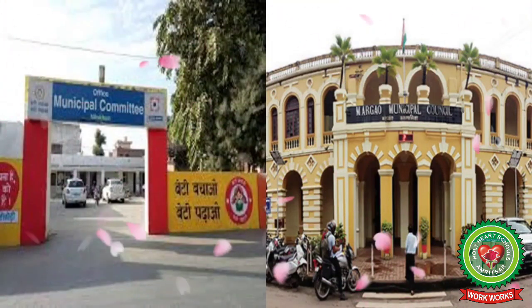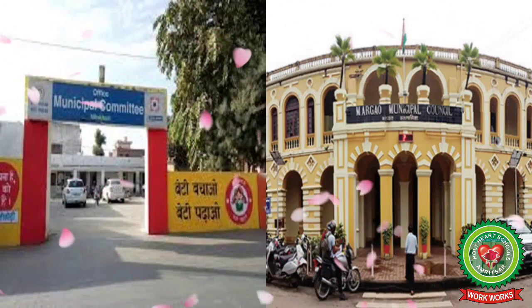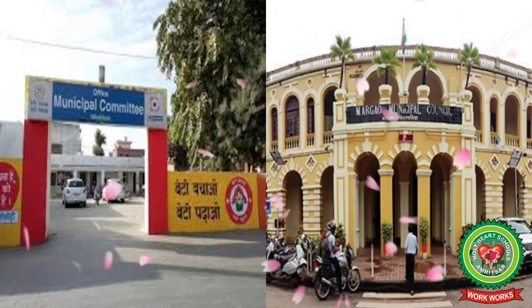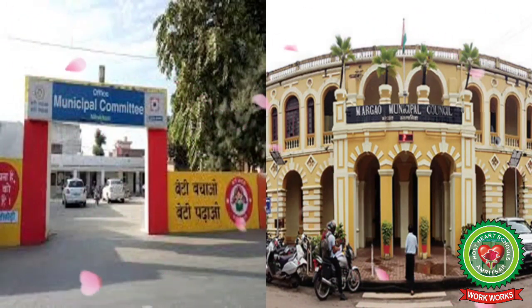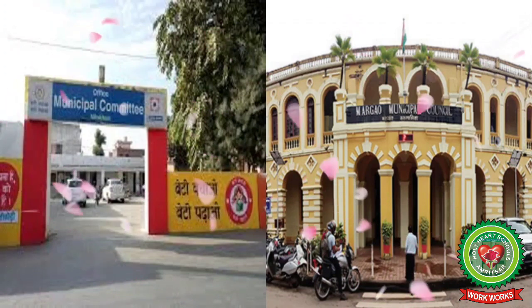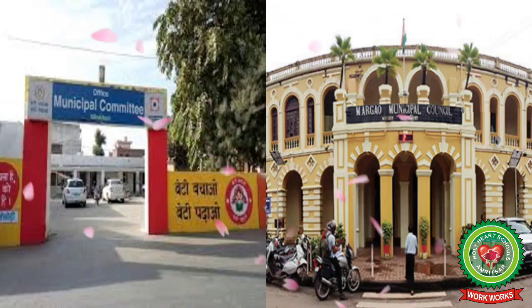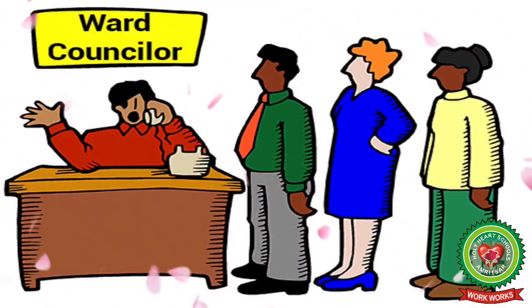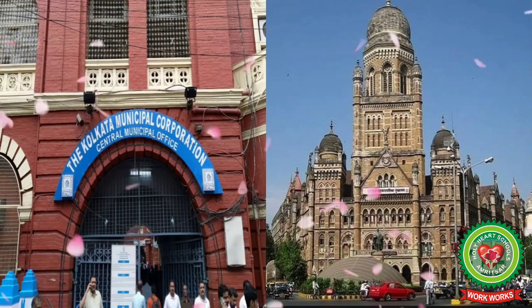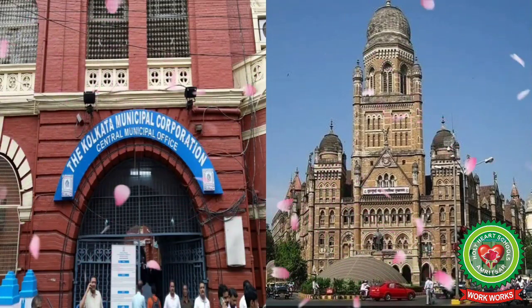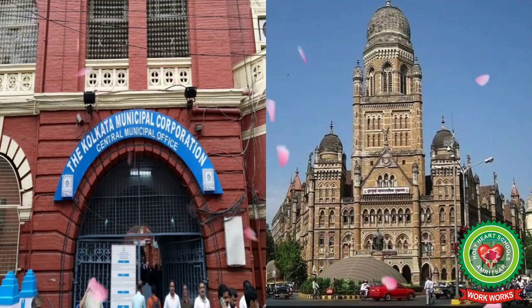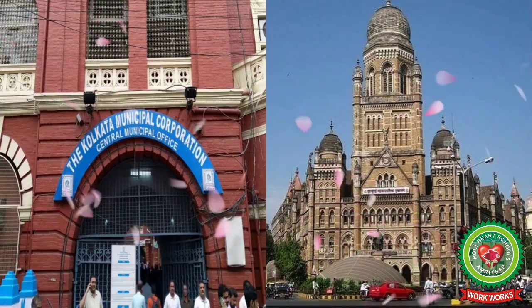In a city, the Municipal Committee does all the things that a Panchayat does in a village, but a city is much bigger than a village. It is divided into many wards, and one person is elected by the people from each ward, called the municipal councillor. The head of the Municipal Committee is called the chairman or president. In very big cities like Delhi, Mumbai, Kolkata, and Chennai, the municipal committees are called municipal corporations, and the Mayor is the head of the corporation.